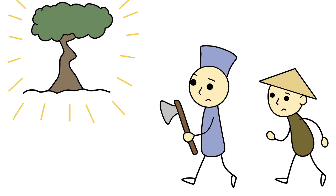Carpenter Shi traveled to Qi and arrived in Twisted Axel. There he saw an oak serving as an earth god shrine. Its canopy could cover several thousand oxen, and it had a circumference of a hundred spans. Towering over the hillside, its lowest branches started at about 80 feet, several tens of them so huge they could easily be made into boats.